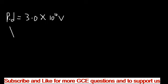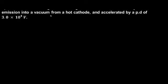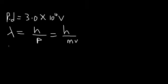From the de Broglie wavelength, lambda equals h over p, where p is momentum. This can be written as h over mv, where m is the mass of the electron. Since the emission is into a vacuum from a hot cathode, the kinetic energy of the electron will be provided by the circuit energy, which is eVs.